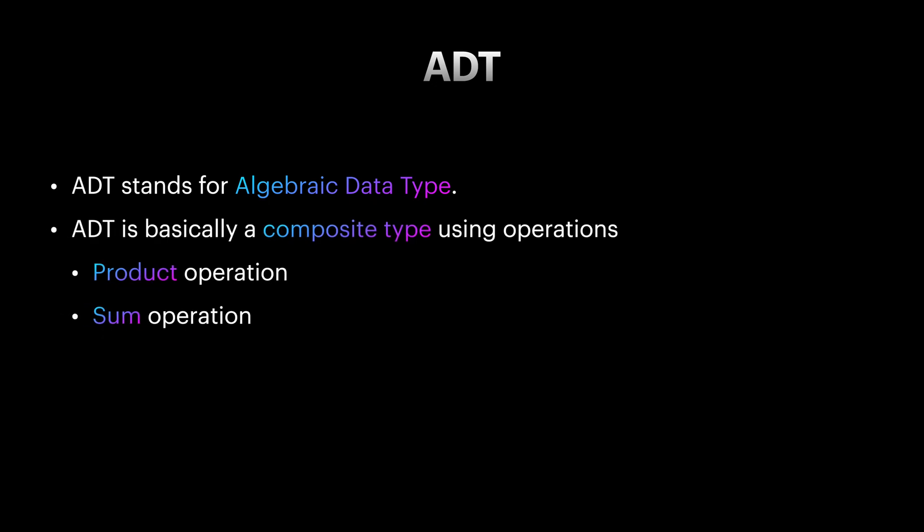Alright, then what is this ADT everybody is talking about? Algebraic data type, or in short ADT, is simply a composite type using sum and product operations. Do not confuse ADTs with abstract data types. They are completely two different concepts. Abstract data type is a type that provides an interface to work with that data type, like a stack which has push and pop methods. Algebraic data types, on the other hand, talks about composing types.